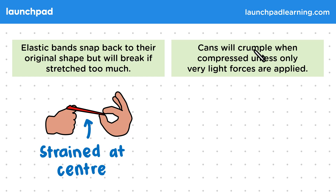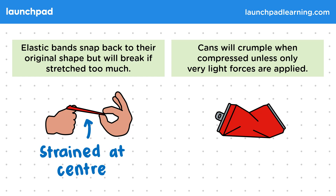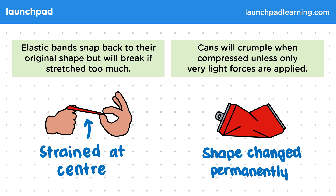Cans will crumple when compressed unless only very light forces are applied. So the can is able to undergo an elastic deformation if a very light force is applied and the metal pops back into place. But the can can undergo an inelastic deformation if a larger force is applied, when the metal doesn't move back when released and the shape is changed permanently.